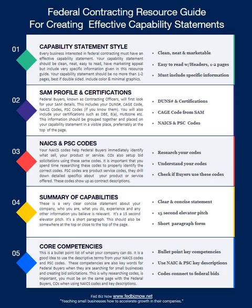List your NAICS codes — at least six, or all of them if you have fewer. Even if you haven't done all your research yet, that's okay — you can always change it. You need a capability statement to present your information and introduce yourself. If you meet a federal buyer using different codes, just change it, because that definitely could happen.